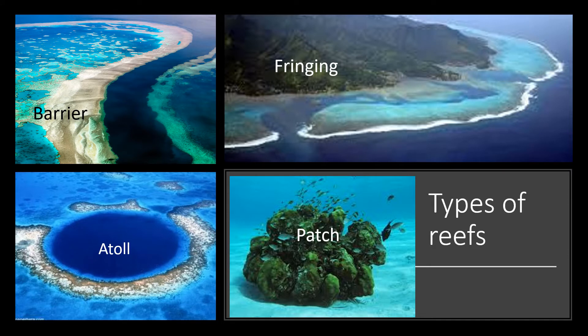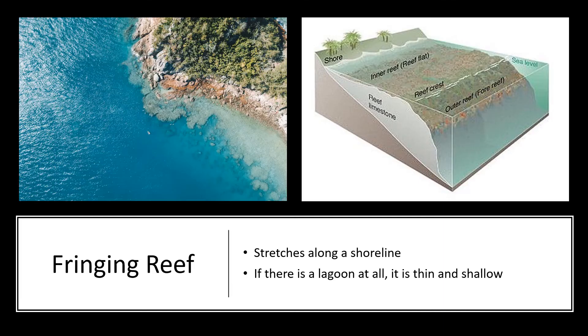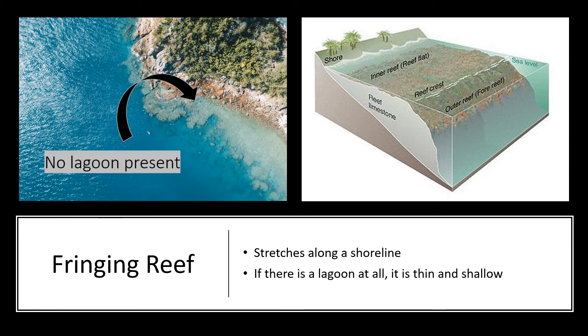Not only are there different parts to a reef, there are also different types of reefs. Barrier reefs are the largest type and may extend hundreds of miles along a coast and into the ocean, creating a lagoon between the shore and the reef crest. Fringing reefs are characterized by being closer to the shore; some lie directly on the shore and have no lagoon at all, or if present, it is generally very small and shallow.